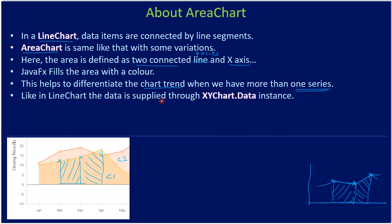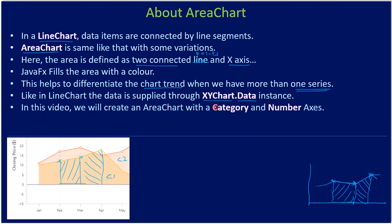Like in a line chart, the data is supplied through XYChart.Data — we already used this and will continue using the same way of supplying data for our area chart as well. In this video we will create an area chart with a category axis and a number axis. Previously we used x as a number axis and y as a number axis. This time we will use x as a category axis, so instead of a month number we use month names like January, February, March, and y will be the sales. We call this a category axis because we can record other information as part of it, such as sales of different categories.